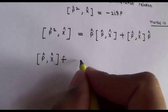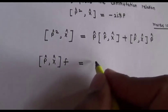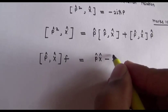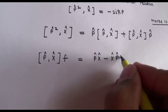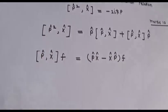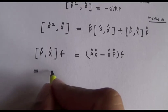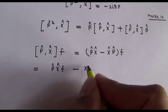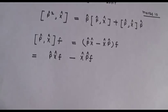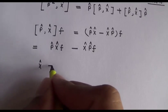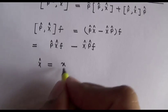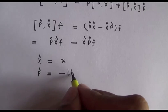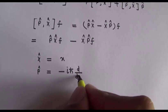To find [p̂, x̂], we operate this on a function f and expand it as p̂x̂ minus x̂p̂ acting on f. We can write it as p̂(x̂f) minus x̂(p̂f). x̂ is the position operator with value x, and p̂ is the momentum operator.